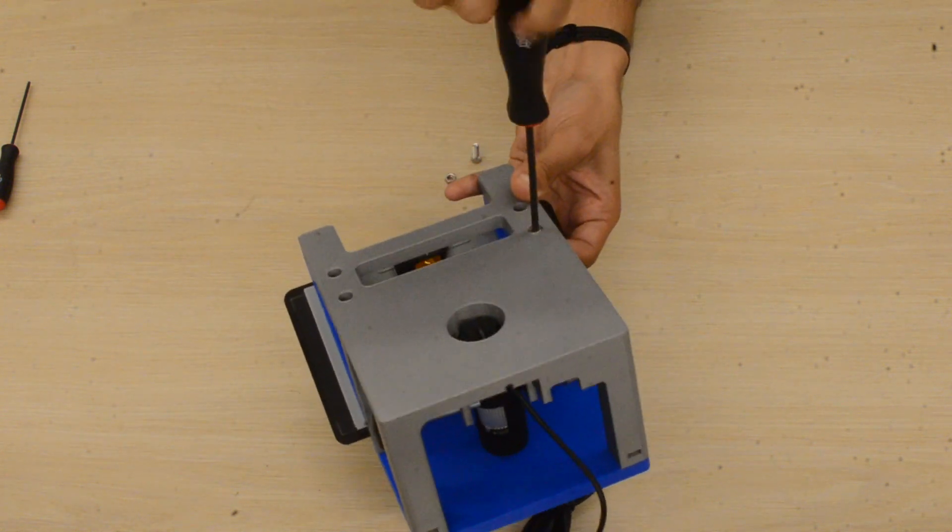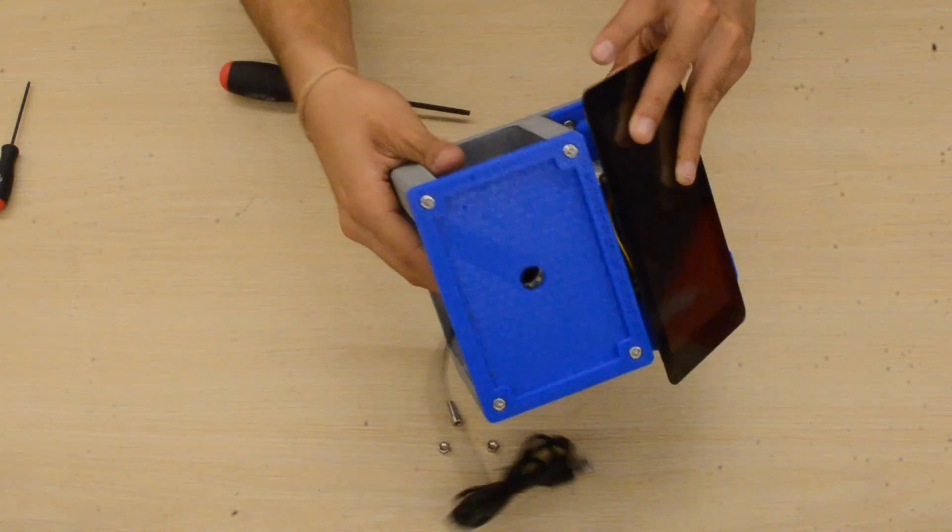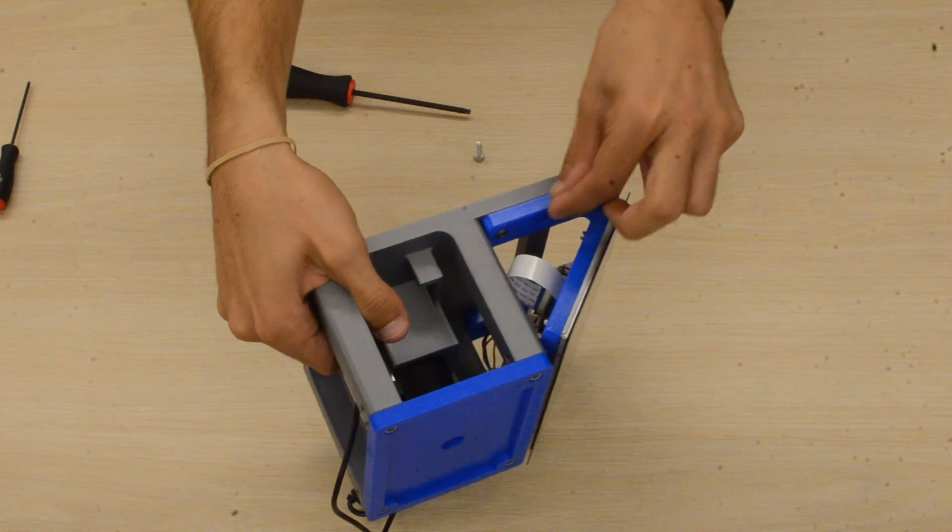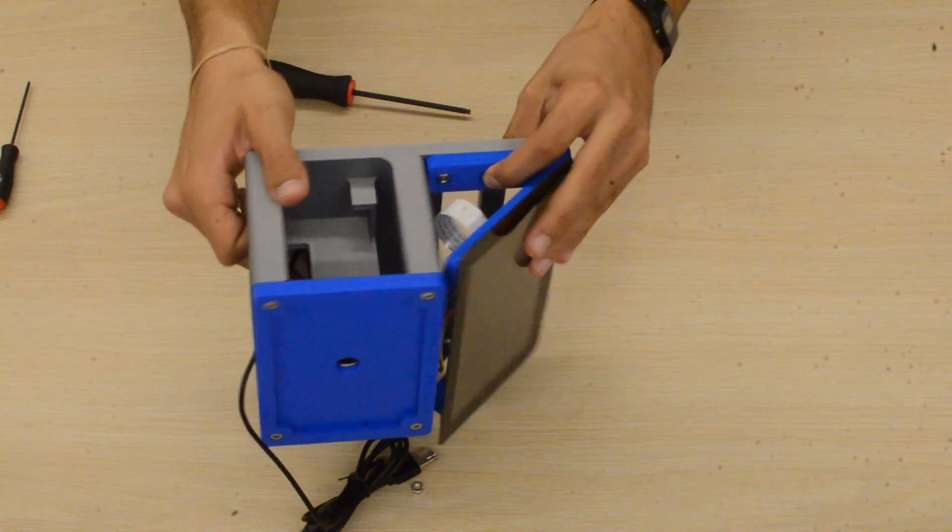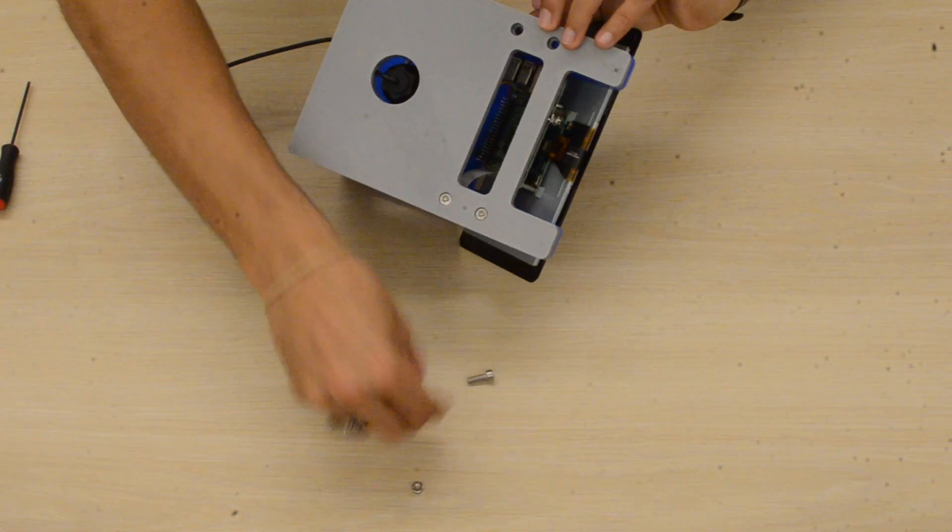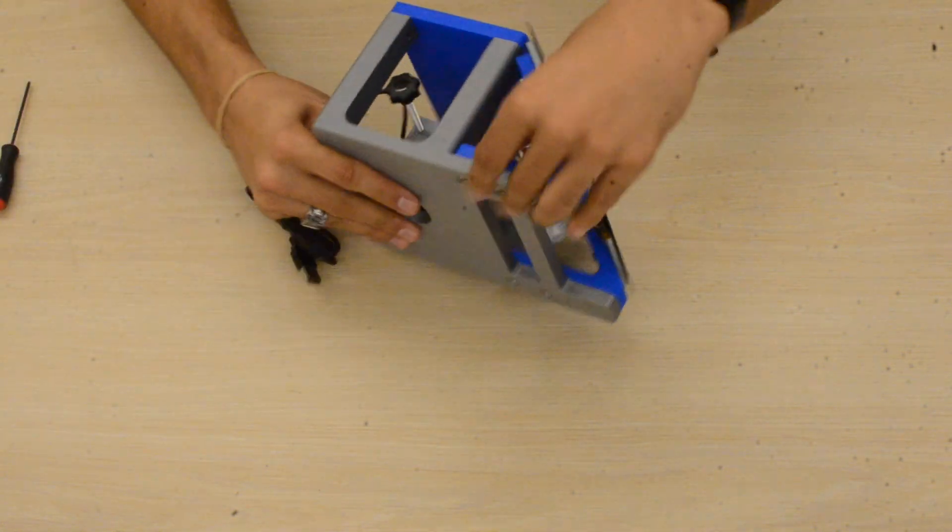Okay, now that that's tightened, we'll do the rest of them. Again, putting them in place on the base, making sure they don't fall out, flipping it over, and then screwing in the screw. Great, and now you're done.